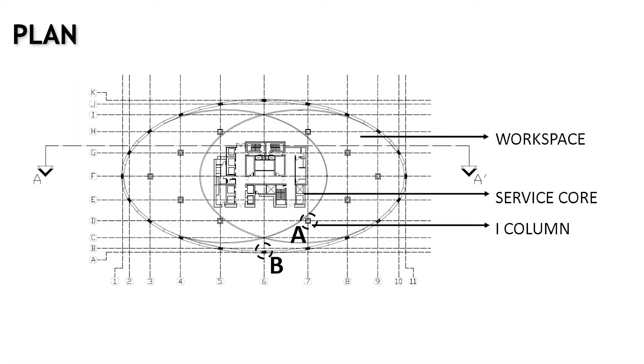This is the typical floor plan of the structure. Total footprint of the structure is 3,350 square meters. In the center is the service core which covers 567 square meters of area. The workspace covers 1,675 square meters and the recreational space covers 1,108 square meters.